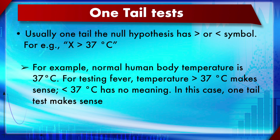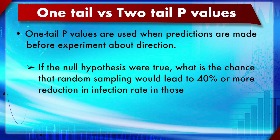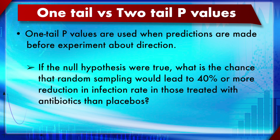For testing fever, the temperature has to be greater than 37°C — not equal to or not equal to 37, which makes no sense. In that case we use a one-tail test. One-tail p-values are used when predictions about directionality are made before the experiment. If you are very sure of the direction, you can use one-tail; otherwise always stick with the two-tail, because scientists often make errors choosing one-tail and later realize the predicted directionality was completely wrong.